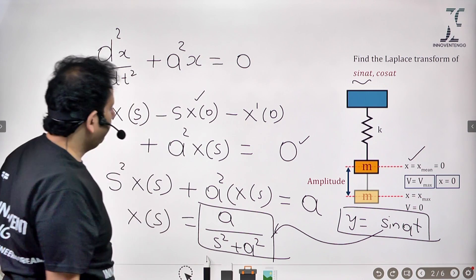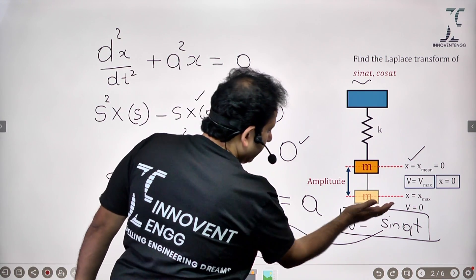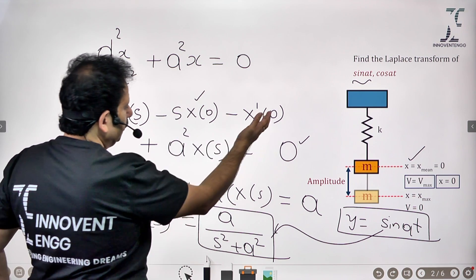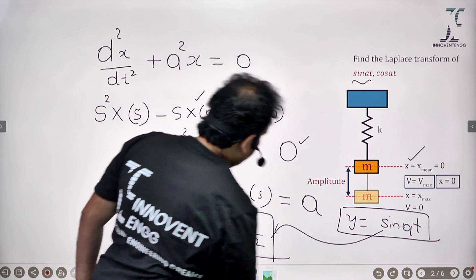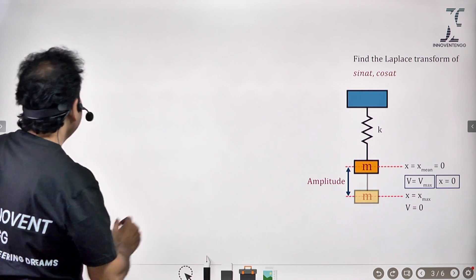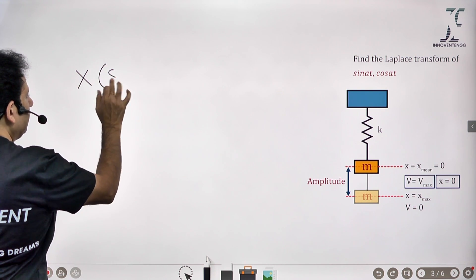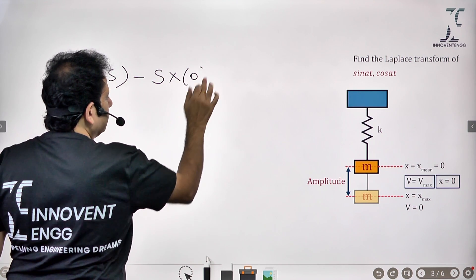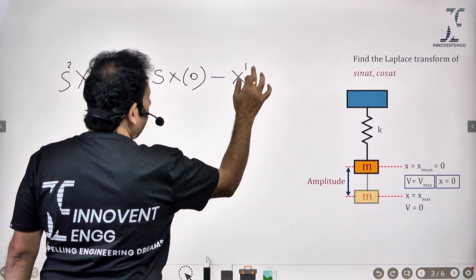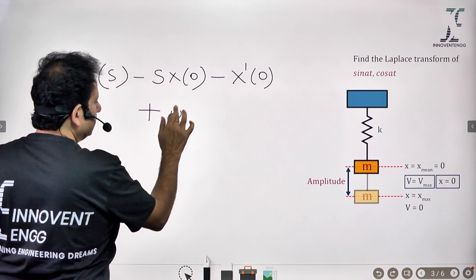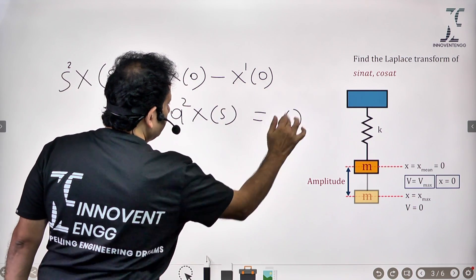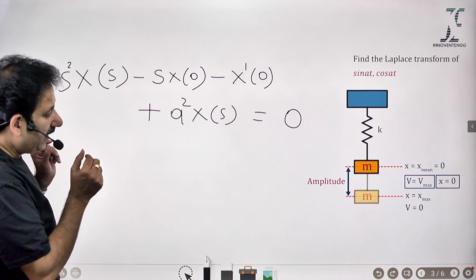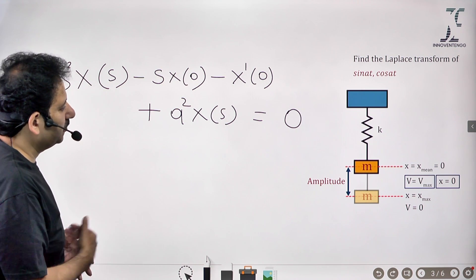Now let us look at what happens if we consider a situation where your motion incepts from an extreme position, not from an equilibrium position. At an extreme position, your amplitude is maximum but your velocity is zero. So if I write the Laplace transform of the differential equation: s²X(s) minus s·x(0) minus x'(0) plus A²X(s) equals zero. When you take the Laplace transform of zero, it is zero. The boundary conditions are very, very critical for Laplace transform whenever you are dealing with differential equations. Here, the mass is starting from the extreme — there is maximum displacement and no velocity.